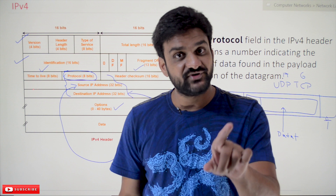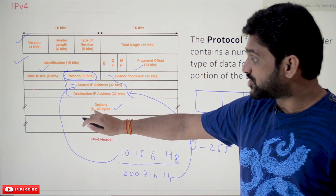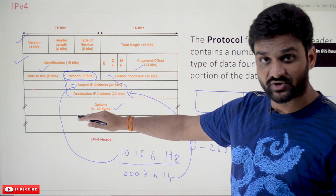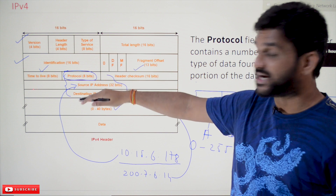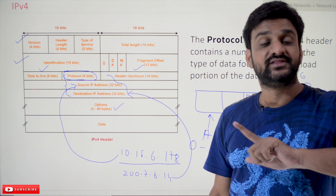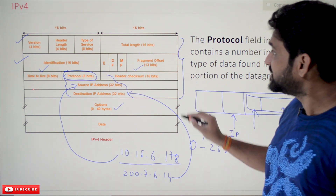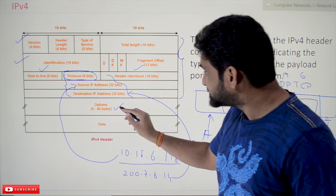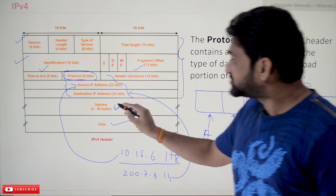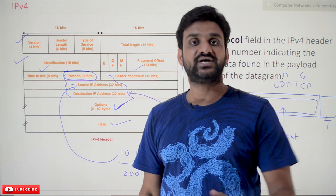In the next class we'll discuss the options field. It can accommodate 0 to 40 bytes, making it the dynamic part of the IPv4 header. All the fields discussed so far are the static, mandatory part — without any one of them, the data packet will not be transmitted. The options field is the optional part, and below it is the actual data to be transmitted.